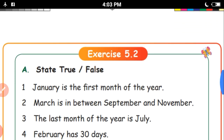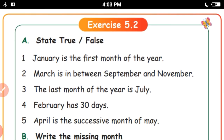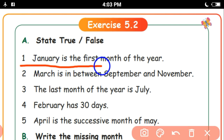Next, Exercise 5.2 — state true or false. First one: January is the first month of the year. January is the first month of the year — it's true.